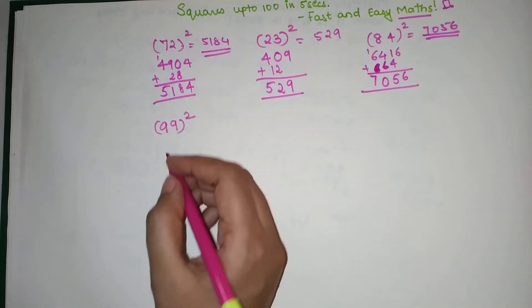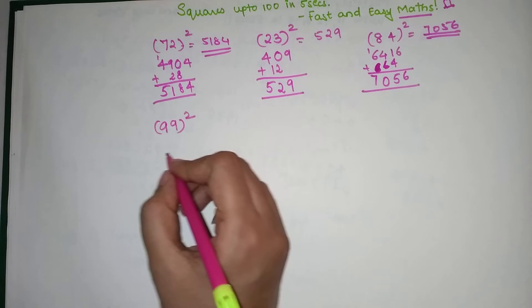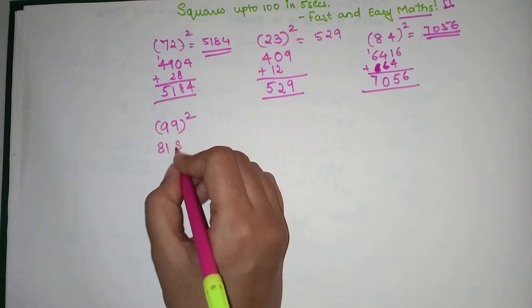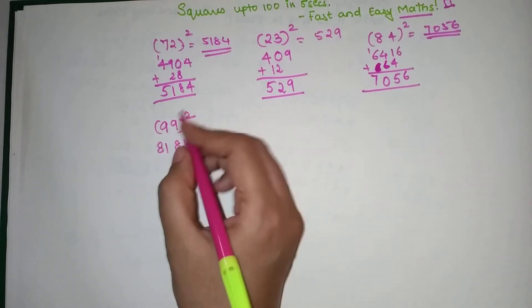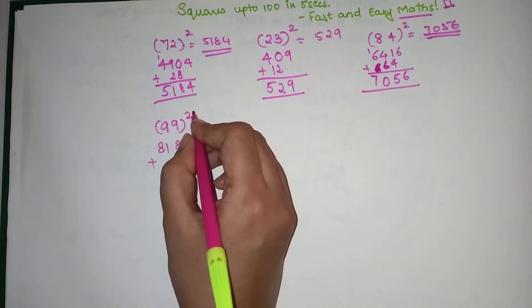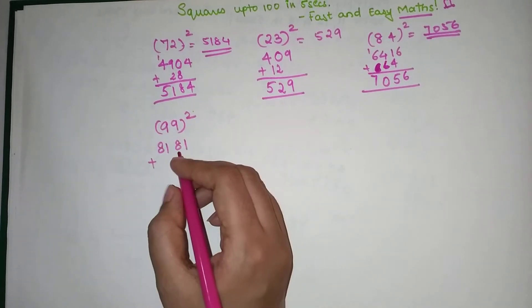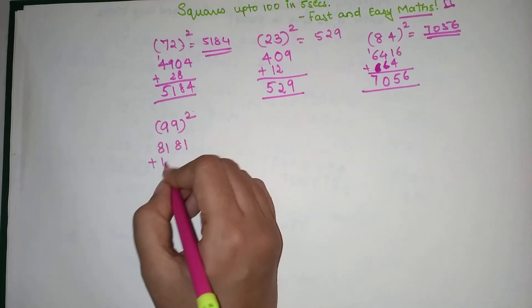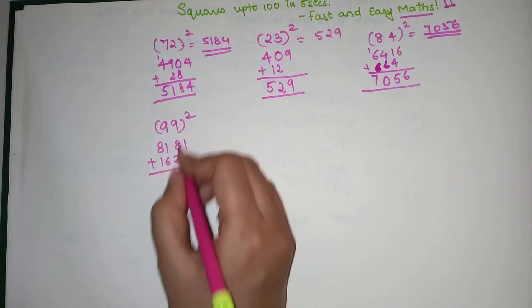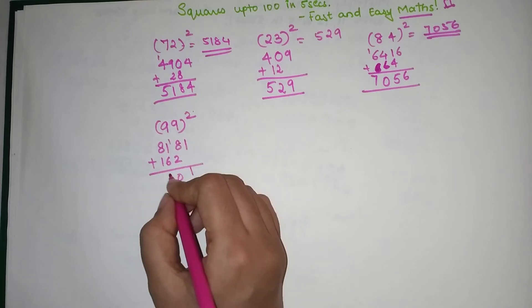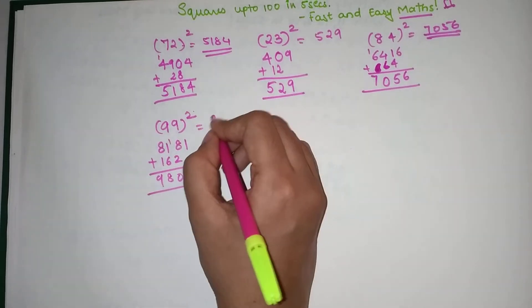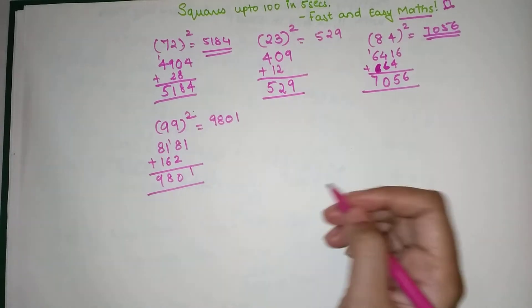For 99²: 9² = 81, and again 9² = 81. Multiply: 81 × 2 = 162. Adding: 1, 10, 8, 9 — so your answer is 9801.